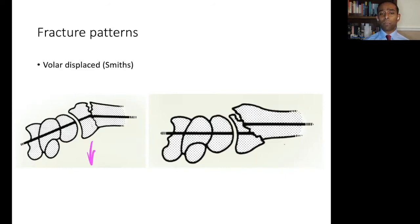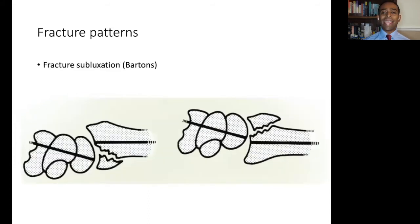In fracture subluxations, termed volar and dorsal Barton fractures, the collinear axis of the hand and forearm are lost. But in addition, there is significant loss of articular congruency, leading to suboptimal articular surfaces and mechanical alignment of the wrist.